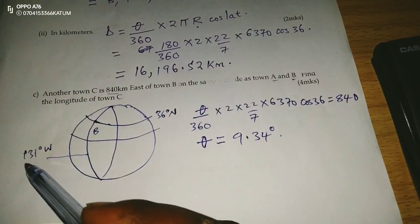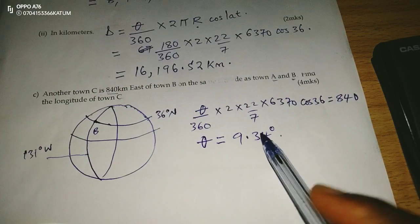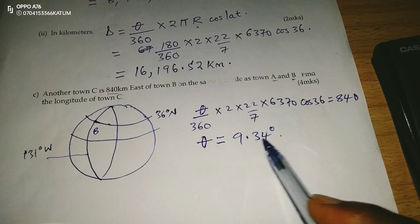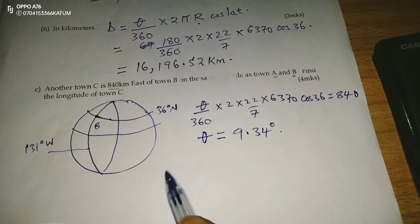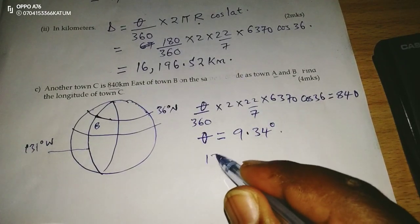it means we are moving from 131 towards east through an angle of 9.34 degrees. That means we are going to find ourselves at, when we take 131,